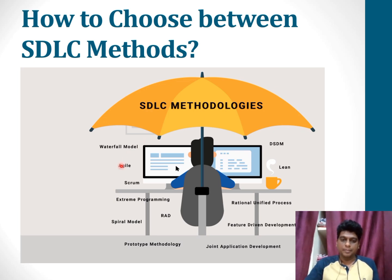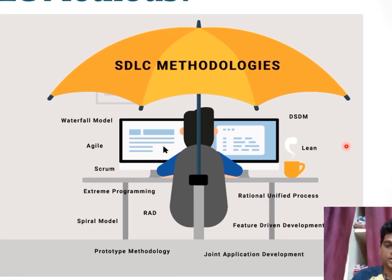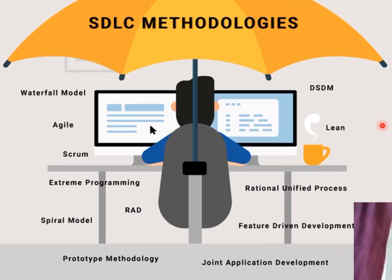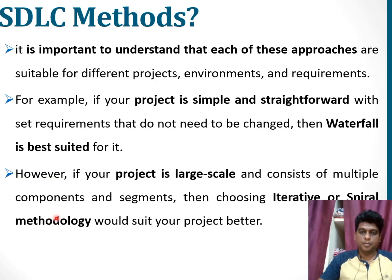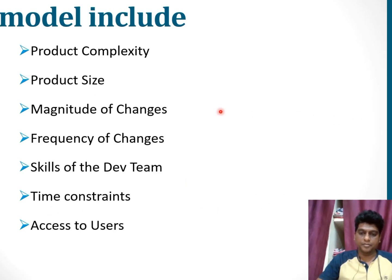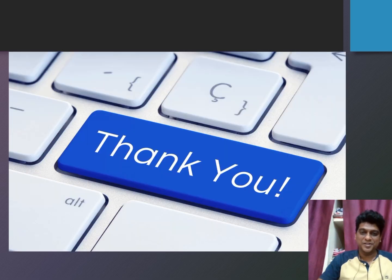How to choose the right software development life cycle methodology: among the many methods, we need to select the appropriate one for a particular software development project. If the project is very simple and straightforward, the waterfall method is the best choice. If the project is large, either the iterative model or spiral methodology is preferred. As a developer, it is important to understand all the methods discussed, and based on all the criteria, decide which model is best.